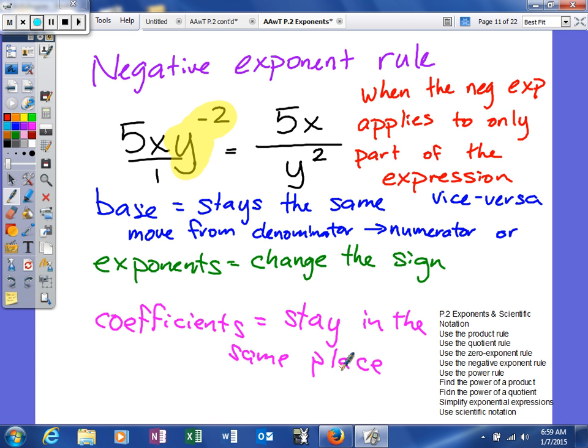So here, this all moves, the y moves. The 5x, right now 5 has a positive exponent of 1, and x has a positive exponent of 1. So we keep those there. If we were to move those, then the exponents for those two things would change. So if we were to take this 5 and move it down here, it would be 5 to the negative 1 power. So we only move the parts of the expression that have a negative exponent.